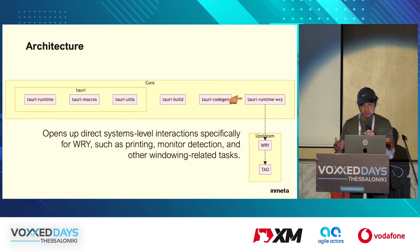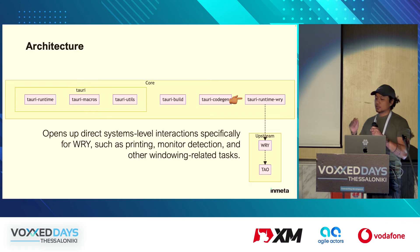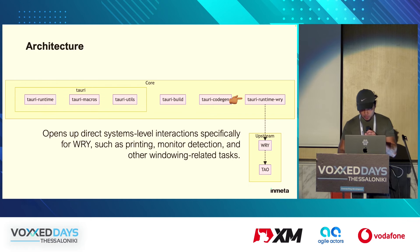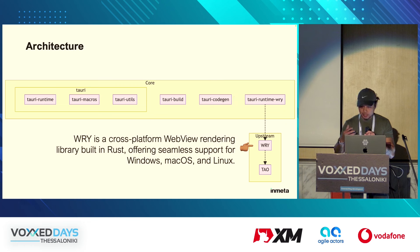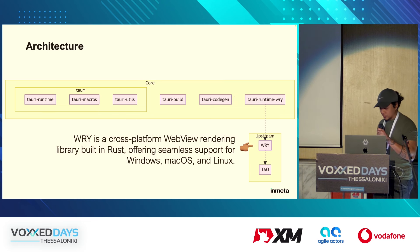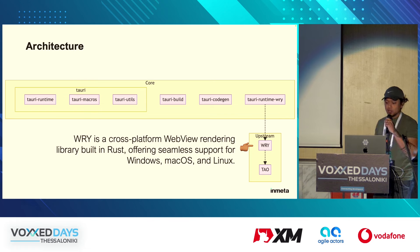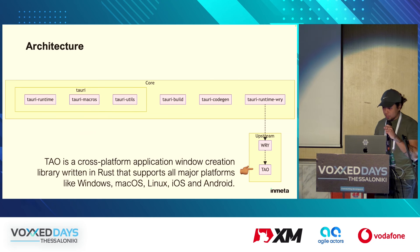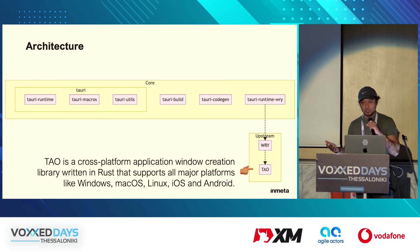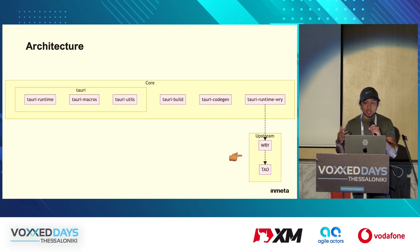Tauri runtime Wry — pronounced 'Wry' — this crate opens up direct system-level interactions specifically for Wry, such as printing, monitor detection, and other windowing-related tasks. Wry is a cross-platform webview rendering library built in Rust, offering support for Windows, macOS, and Linux. And Tao is a cross-platform application window creation library written in Rust that supports all major platforms: Windows, macOS, Linux, iOS, and Android. Wry and Tao are the libraries that talk to the operating system to instantiate the window and the webview.